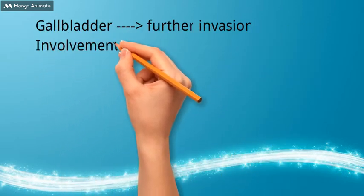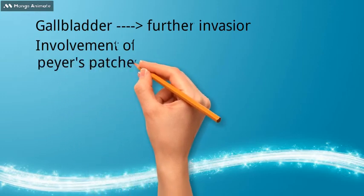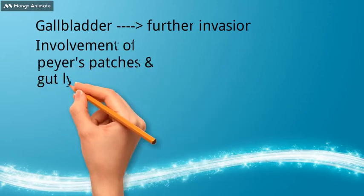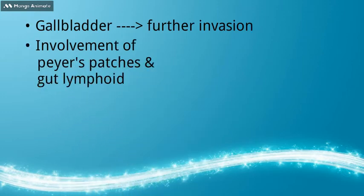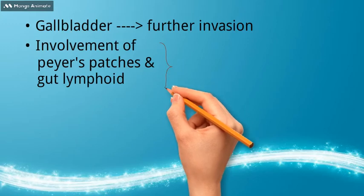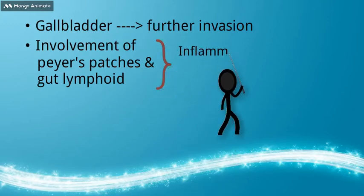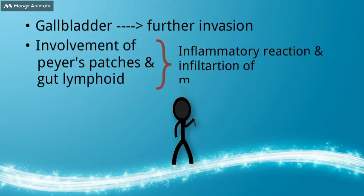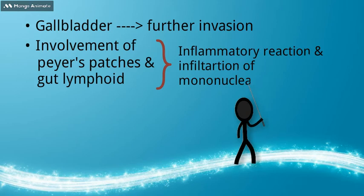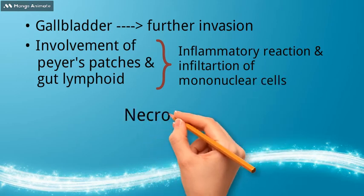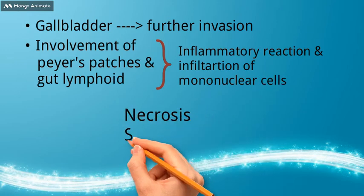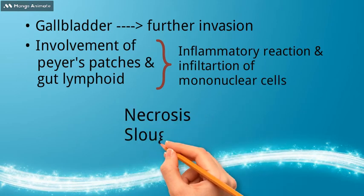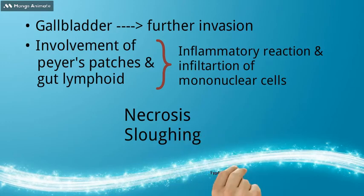Involvement of Peyer's patches and gut lymphoid tissue leads to an inflammatory reaction and infiltration with mononuclear cells, which results in necrosis, sloughing, and the formation of characteristic typhoid ulcers.